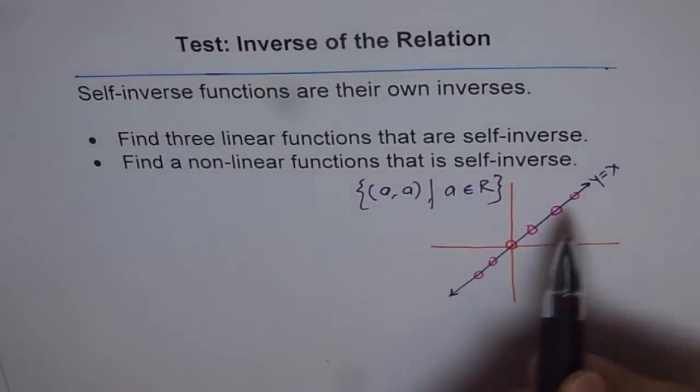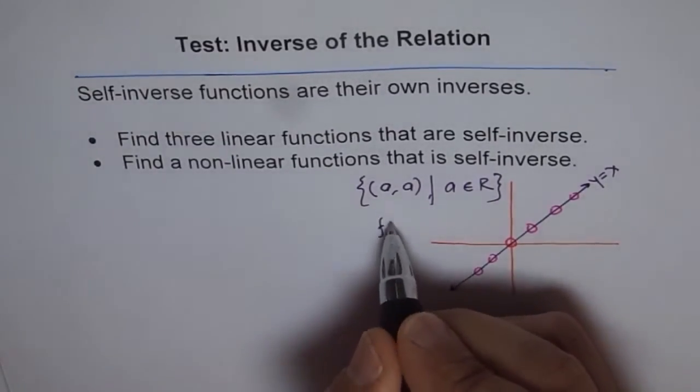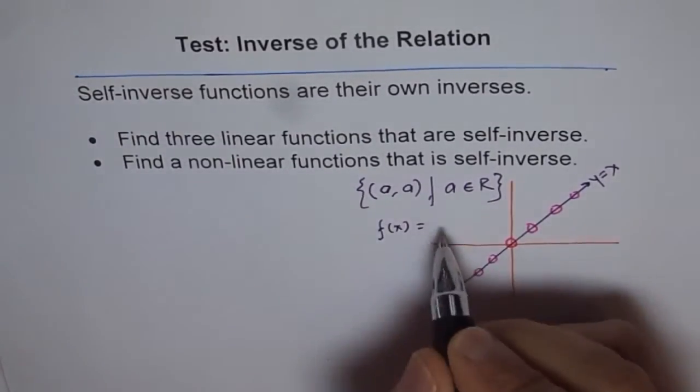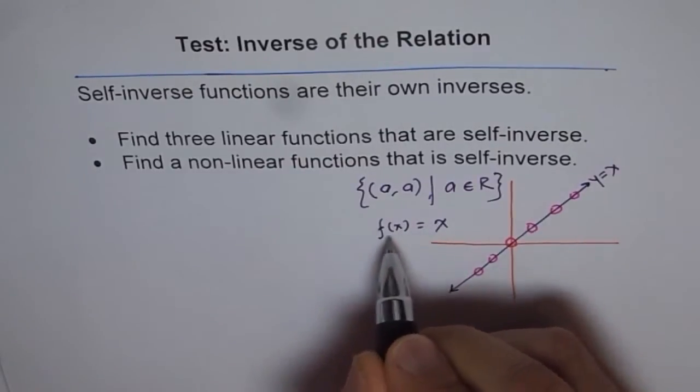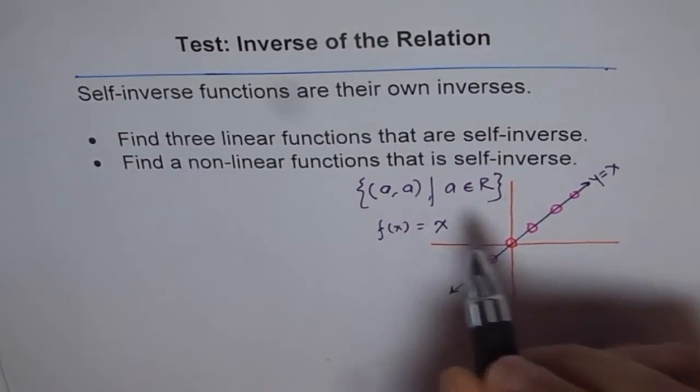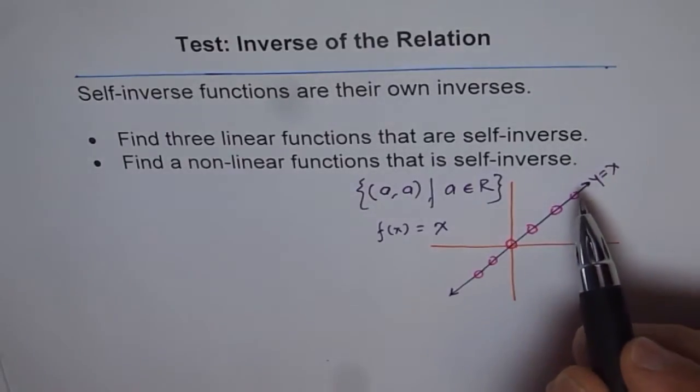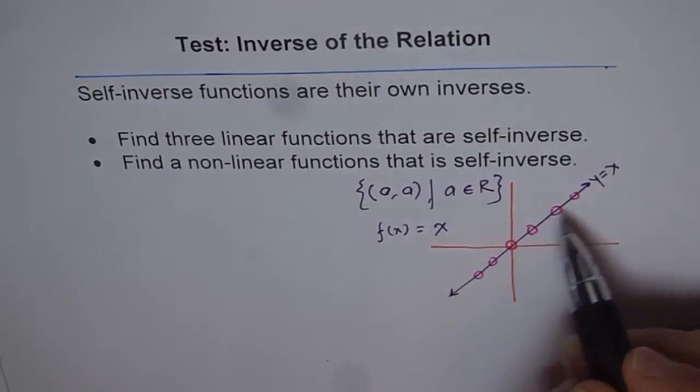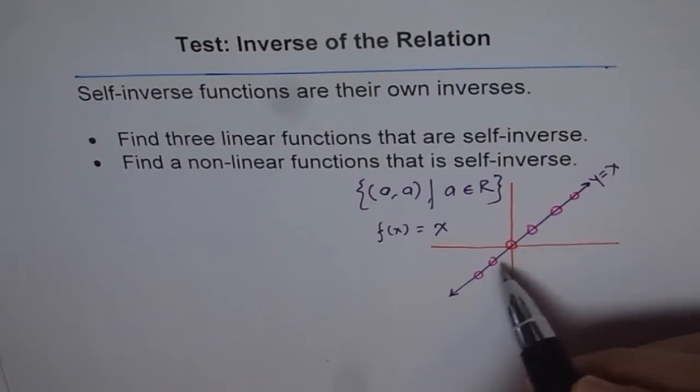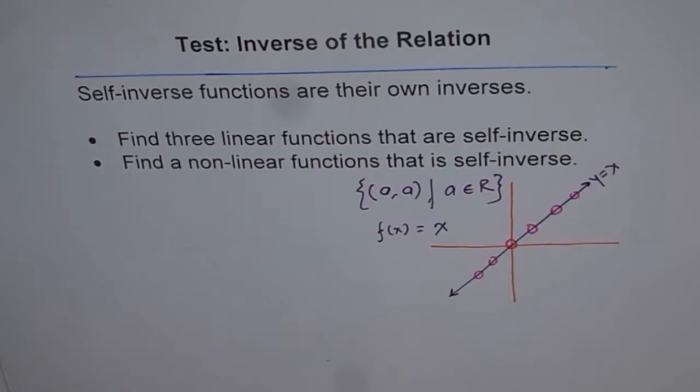In a way, this represents a line. So here, we could say a function f of x equals to x, that would be y equals to x. A set of points where x and y values are same. Do you see that? So that is, you would say, self-inverse.